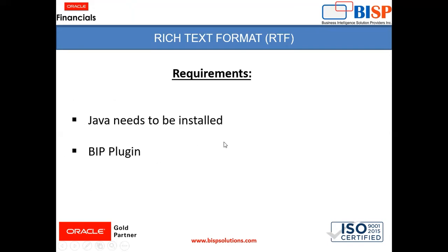There are two requirements which we need to fulfill for the successful running of RTF. First, you need to install Java in your system, and the BIP plugin should also be installed. When you install this BIP plugin, you will get a Publisher tab in your MS Word, and we can create reports using that tab.